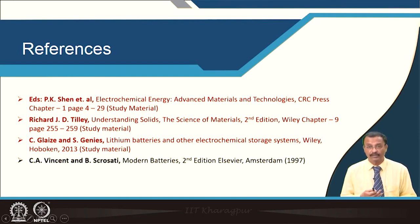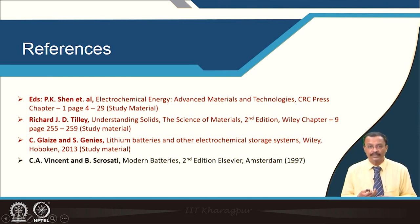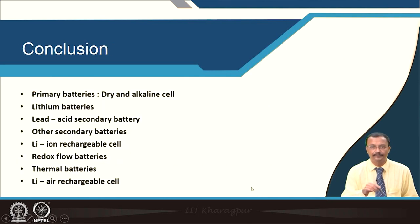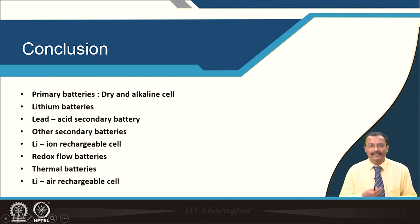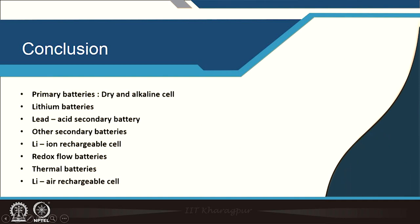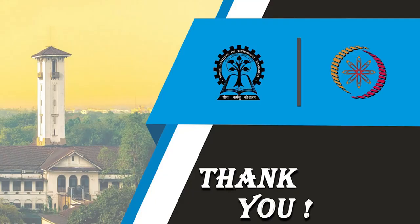The study material for this lecture is taken from different sources, and 'Modern Batteries' by Vincent and Scrosati is an excellent book — please go through the relevant portions. In this lecture we talked about primary batteries including dry and alkaline cells, lithium primary batteries, lead acid secondary battery, other secondary batteries including nickel cadmium, nickel metal hydride, nickel hydrogen, silver zinc, and nickel zinc, lithium ion rechargeable cells, redox flow batteries including vanadium and zinc bromine, sodium sulfur thermal batteries, and lithium-air rechargeable batteries. Thank you for your attention.